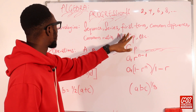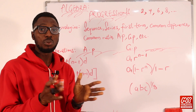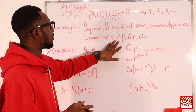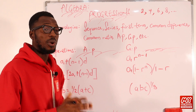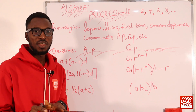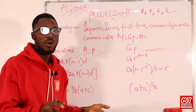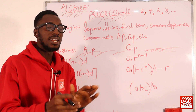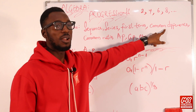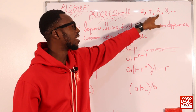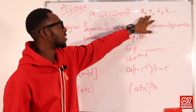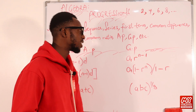Still under terminologies, we are going to consider the different types of progression we should know. We have the AP — arithmetic progression — and the GP — geometric progression — among others that we'll talk about further in the video. AP, arithmetic progression, is a type of sequence whereby the terms increase or decrease by a constant amount, and that constant amount is the common difference. You can see the terms increase or decrease by a constant amount, and that makes them consecutive.